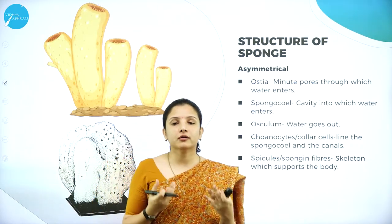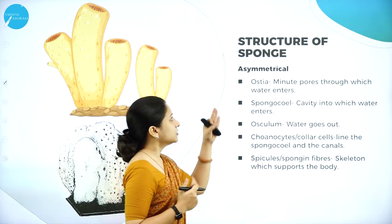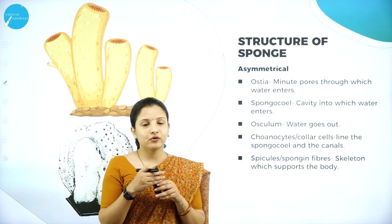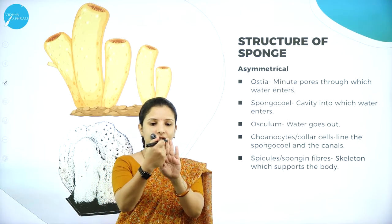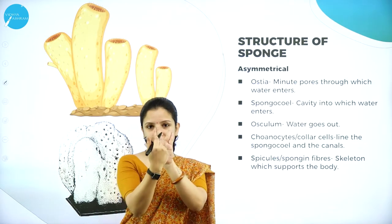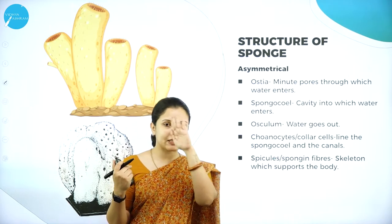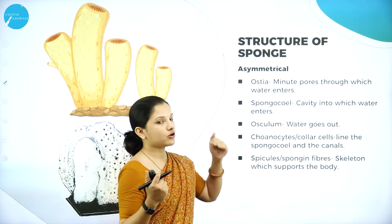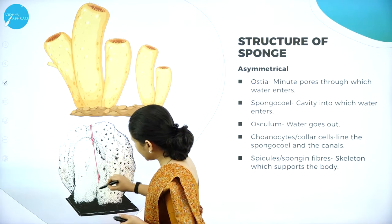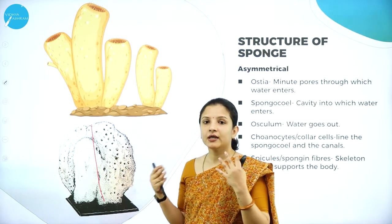Next, moving on to the structure of the sponge. When you look at a sponge, they are asymmetrical. To illustrate asymmetry - if I draw a line in between my hand, both sides do not look similar to each other. So my palm is asymmetrical. Similarly, in sponges, if you draw a line in between, this side is completely different from that side - they are not identical to each other. That is why it is asymmetrical.